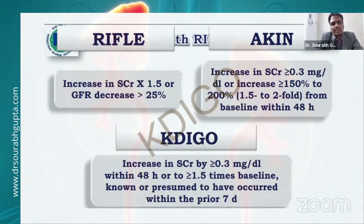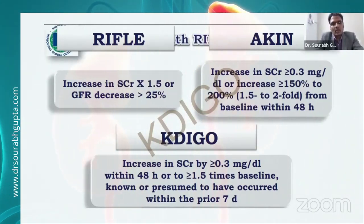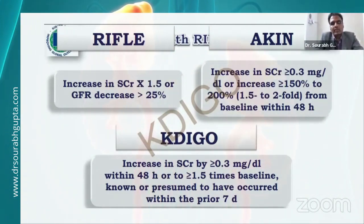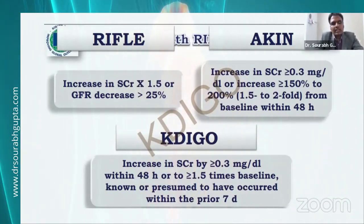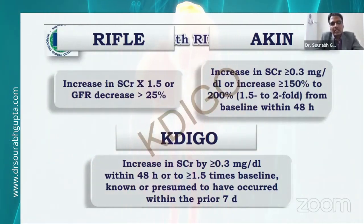The KDIGO criteria state that AKI is diagnosed if there is an increase in creatinine of at least 0.3 within 48 hours, or an increase in creatinine by 1.5 times from baseline over 7 days, or decreased urine output below 0.5 ml per kg per hour for 6 hours. This is the KDIGO recommendation.